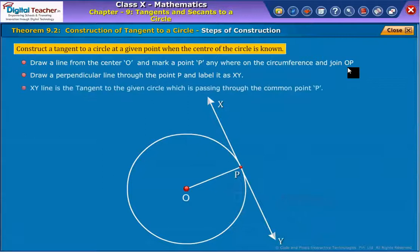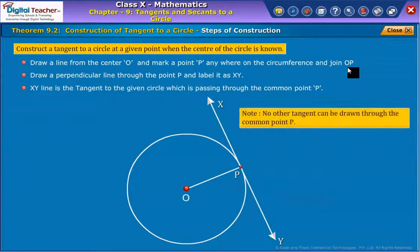XY line is the tangent to the given circle which is passing through the common point P. Note that no other tangent can be drawn through the common point P.